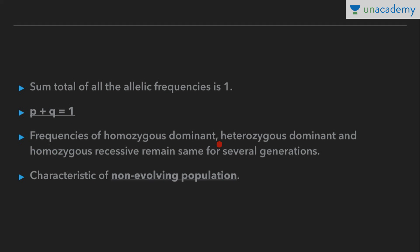Now, for a given gene, the homozygous dominant allele is represented by AA, and its frequency is P squared. Heterozygous dominant is represented by Aa, with frequency 2PQ, and homozygous recessive is aa, with frequency Q squared. These frequencies remain the same for several generations, according to Hardy-Weinberg law.